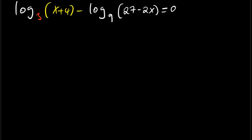So how can we solve this type of logarithmic equation? Remember, since there is a minus here, the only method that can work is simplifying this into a single logarithm. But again, simplifying this can't work just like this because this is in base 3 and this one is in base 9, so I have to change this base from base 9 to base 3.